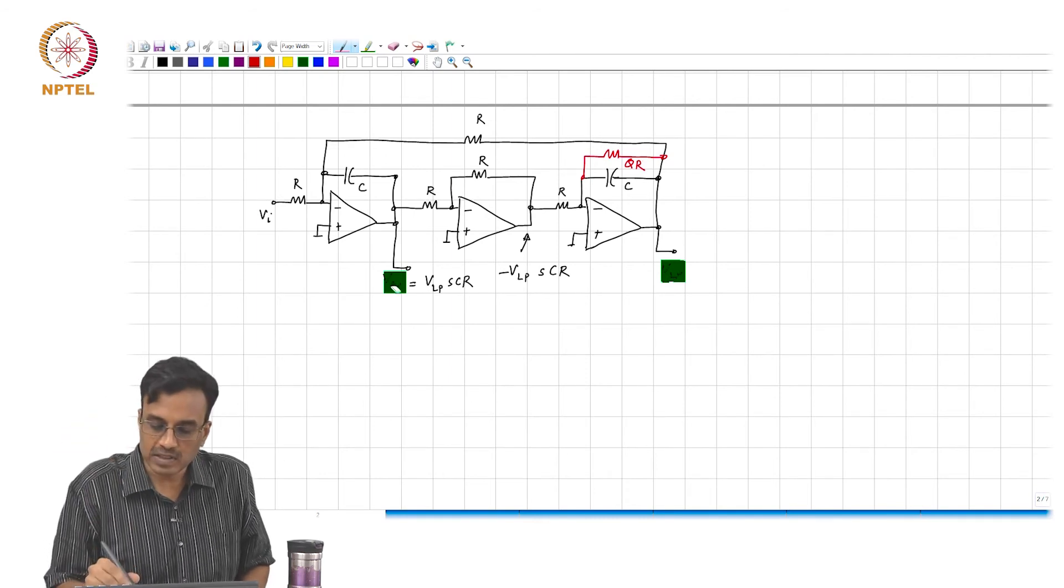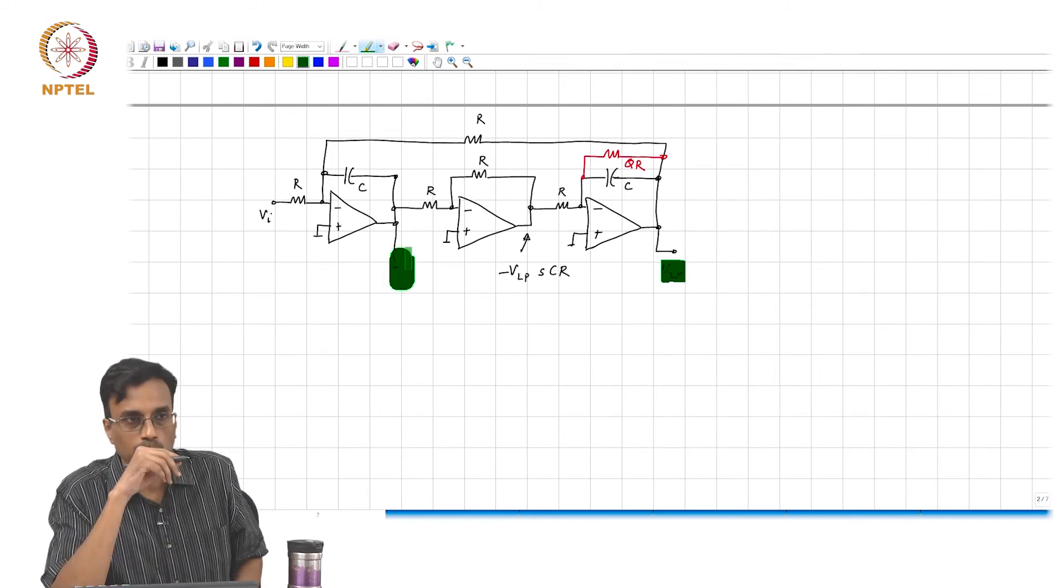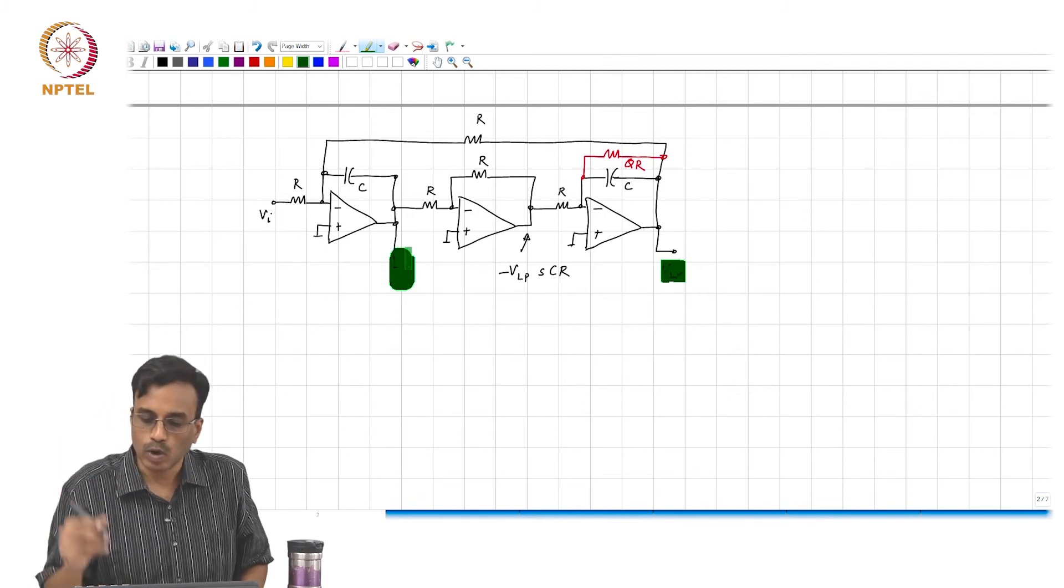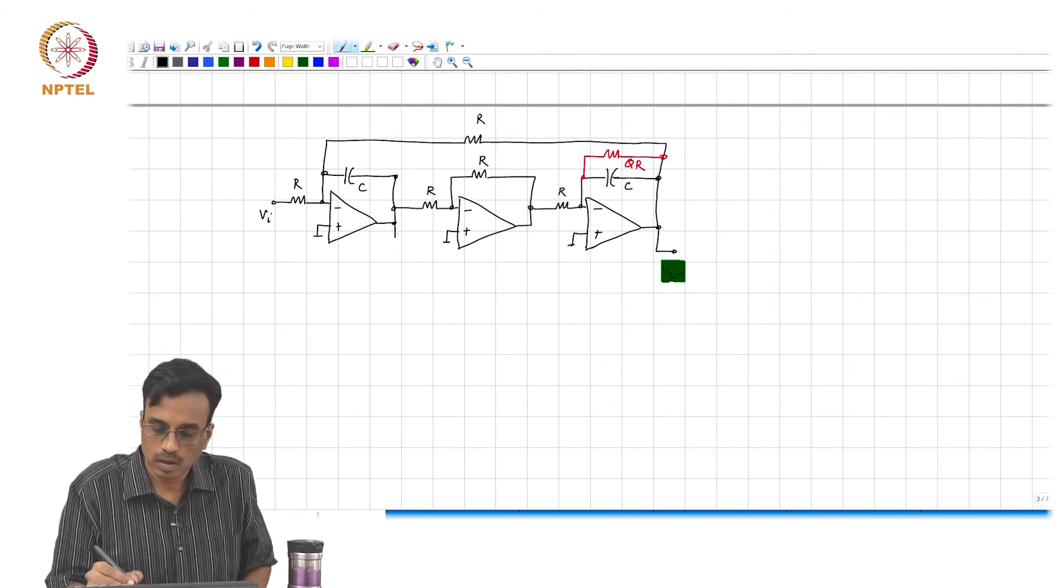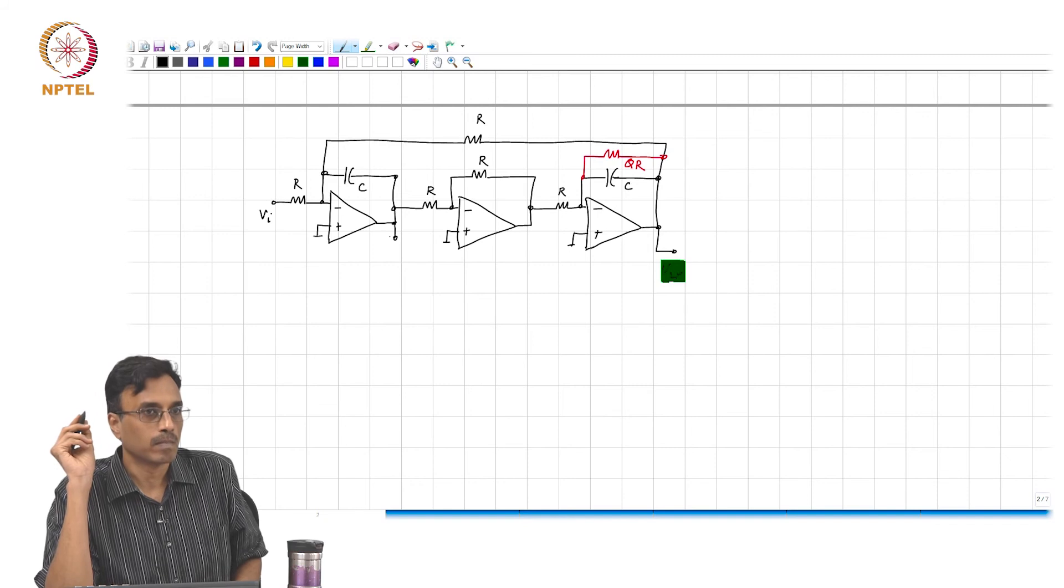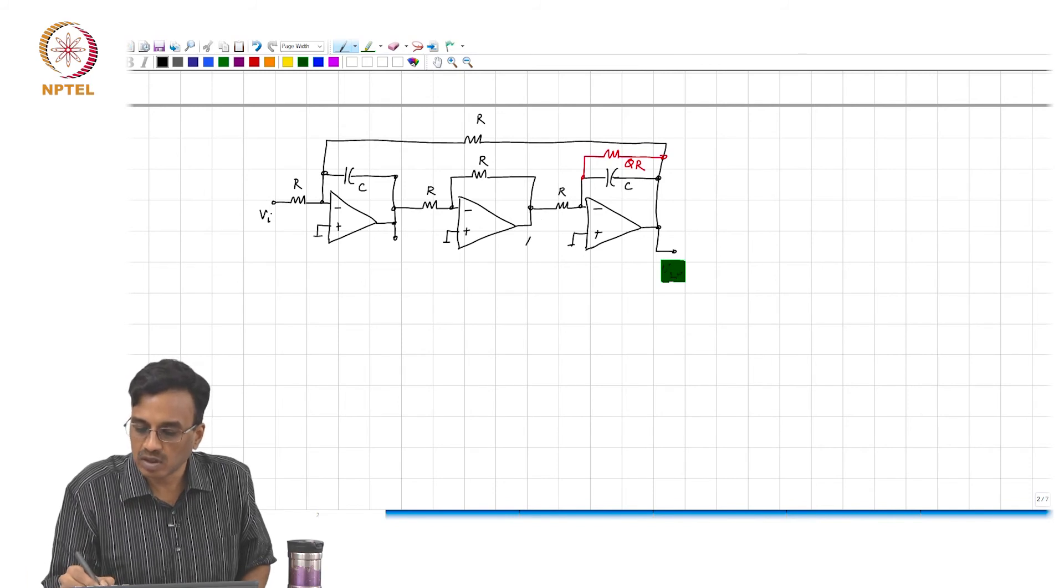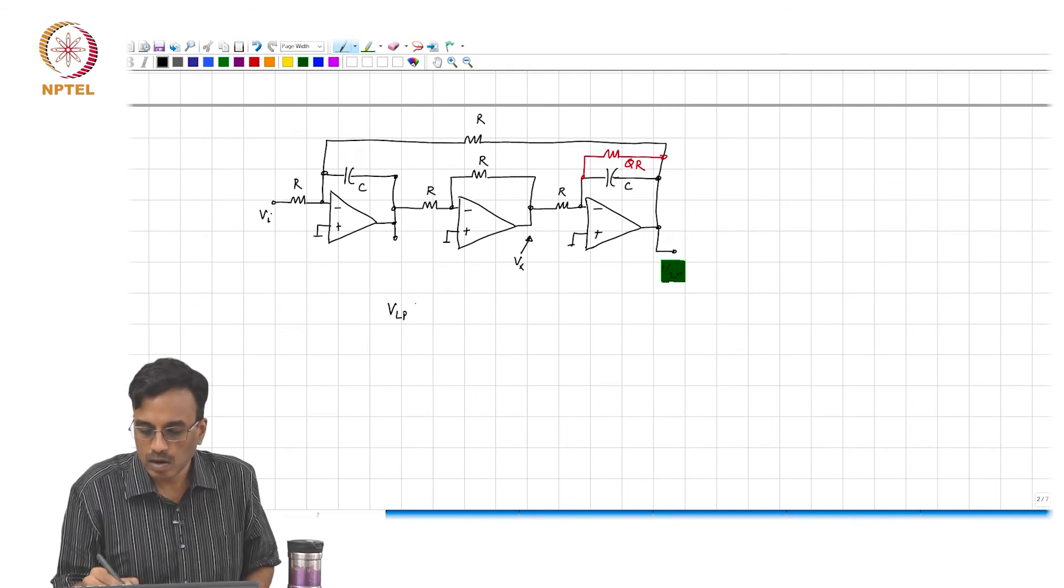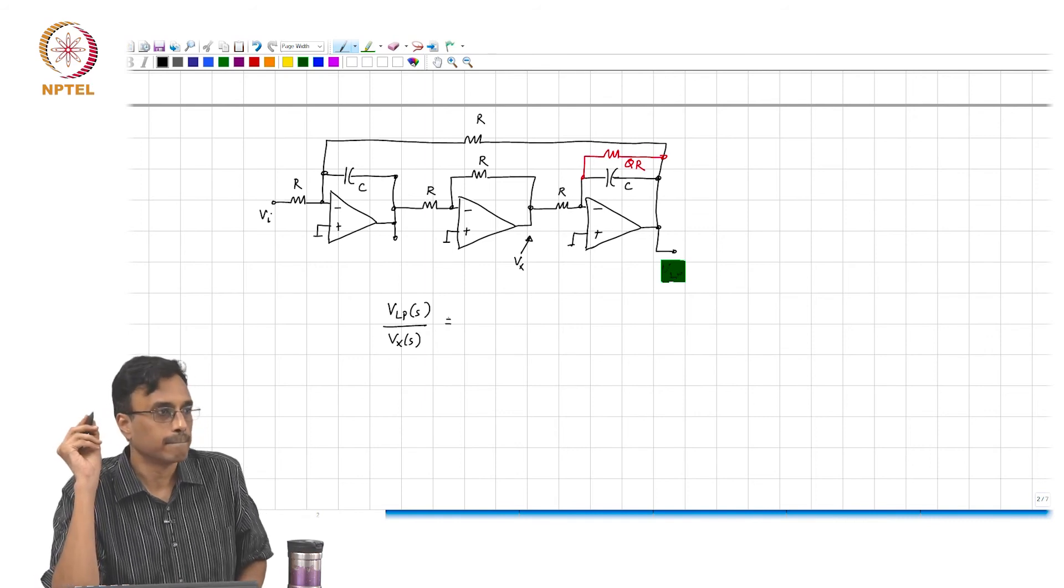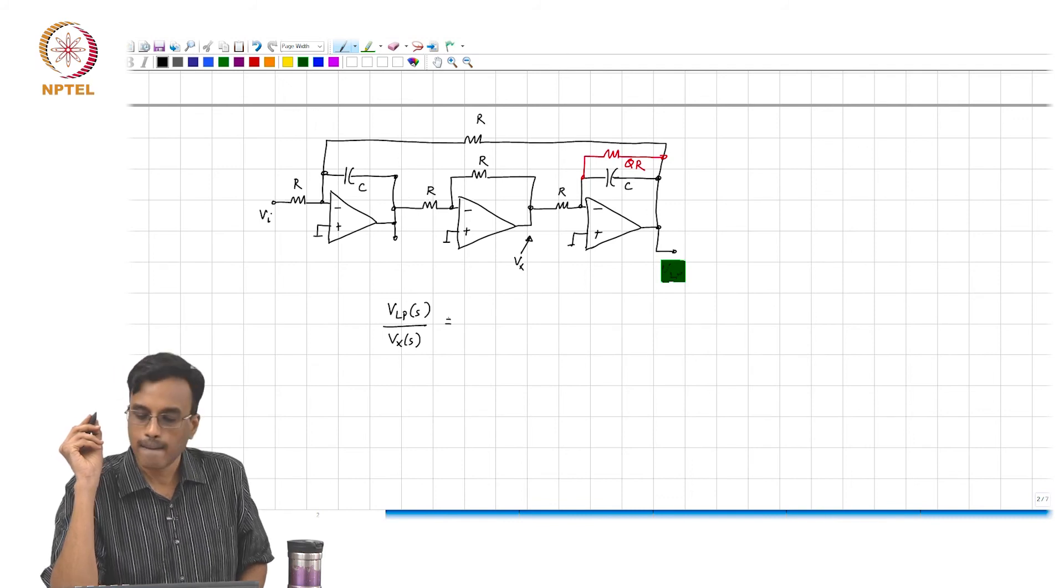Can you comment about the band pass nature of this transfer function now? Will this be band pass? What comment can we make about this transfer function? This is low pass, we know that. What comment can we make about this transfer function? Let us call that Vx, what is Vlp of S by Vx of S? What is the DC gain?